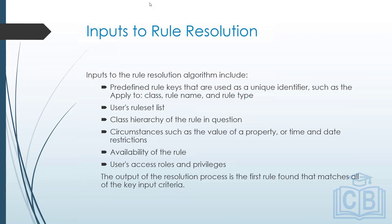The inputs for finding the right rule include: the unique identifier of the rule (the name), the rule type, the version, any circumstance relating to that rule, the availability of the rule, and the user's privilege. Considering all these things, the system finds the most appropriate rule matching all inputs for the given context.